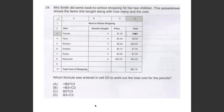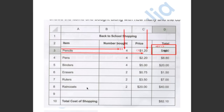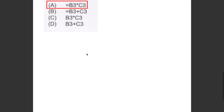This question asks us which formula was entered in cell D3 to work out the total cost for the pencils. As you can see in this spreadsheet, =B3*C3 was entered in cell D3. So the answer has to be A, equal B3 times C3.